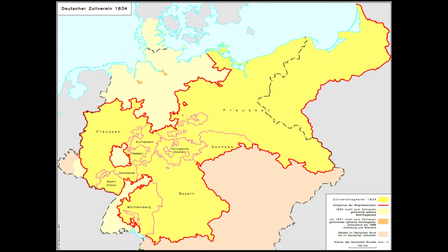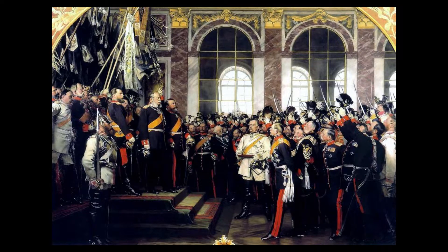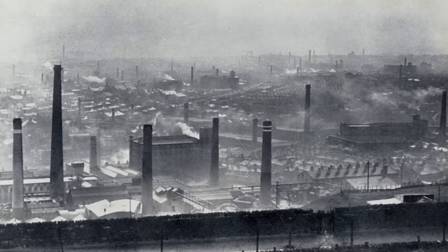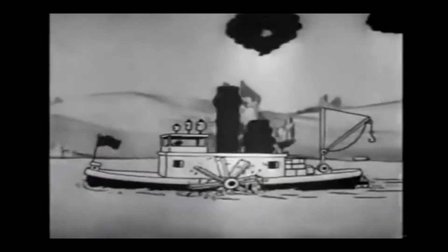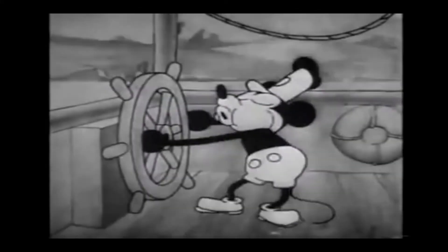Prior to German unification, the Zollverein was a trade agreement between the German states that helped bolster their economy. Once unified, the German government heavily subsidized industry and transportation networks. This, paired with Frederick List's national system, which called for heavy protective tariffs, enabled Germany to become a key player in industrialized Europe. The Bessemer process — a more efficient way of producing steel by blasting hot air through molten iron to remove impurities — was also a major driver. A major product of the Industrial Revolution was the steamboat, which allowed for a much more interconnected economy.